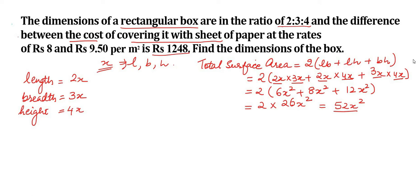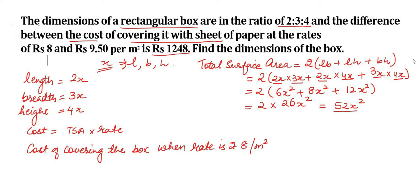The cost is equal to total surface area multiplied by the rate. The cost of covering the box when rate is rupees 8 per meter square will be equal to area, that is 52x² multiplied by 8, equal to rupees 416x².